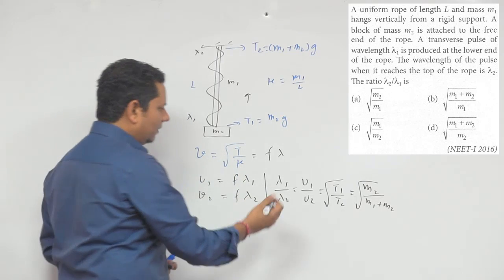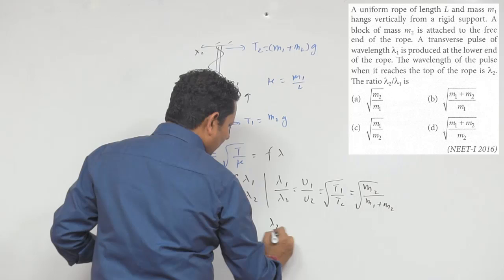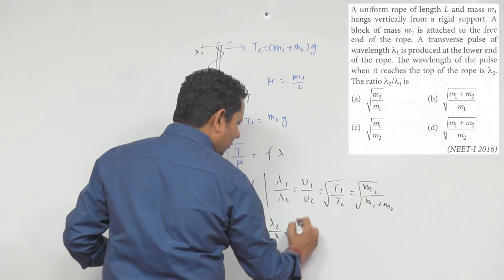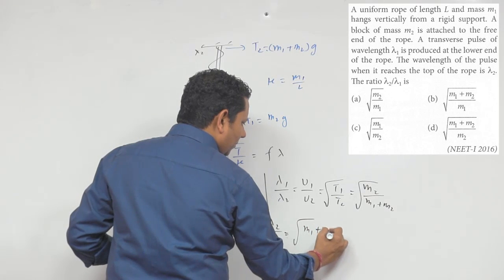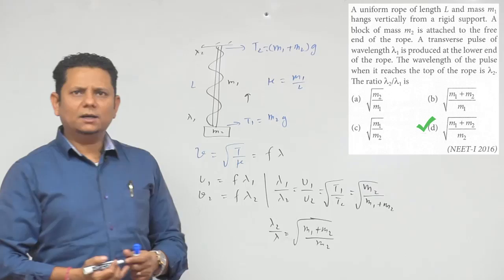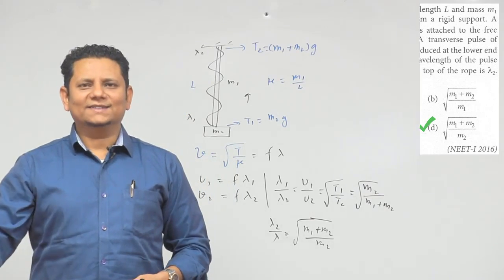If we invert this to find lambda 2 by lambda 1, we get the square root of M1 plus M2 divided by M2. Based on this, we can say that option D would be the right answer.